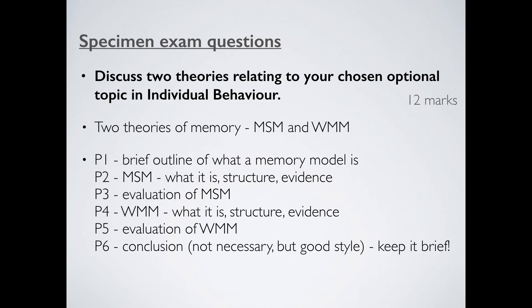Paragraph five: remember, we must evaluate. The working memory model accounts for lots of different memories than the multistore does, but have we really explained anything at all? Especially that central executive — what is it? Do we have any evidence that it exists? Lots of things you can mention there. Paragraph six: not necessary to put a conclusion in, but it's good style if you do — and if you do, keep it brief. We don't want you spending all your time on this, as you've got another four essays to write after this.